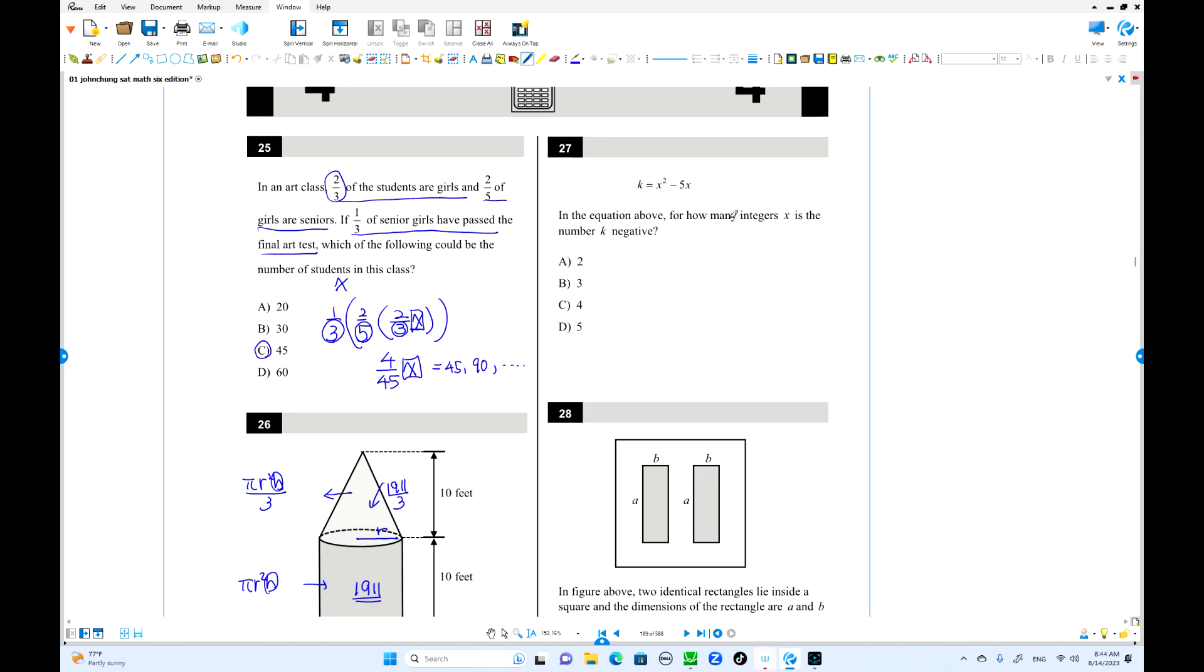Problem 27: f(x) equals x cubed minus 5x squared. For how many integer values of x is f(x) negative? Factor: x times (x minus 5). The graph passes through x equals 0 and x equals 5. Between these points, at x equals 1, 2, 3, and 4, the y values are all negative. So four numbers are available.